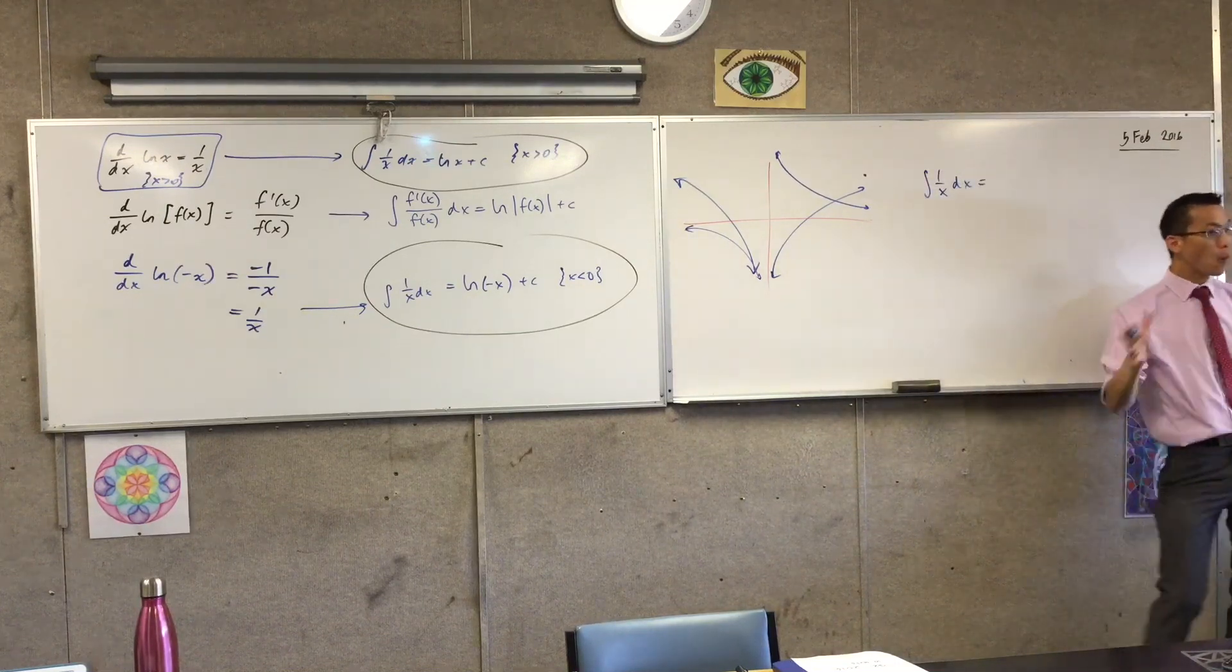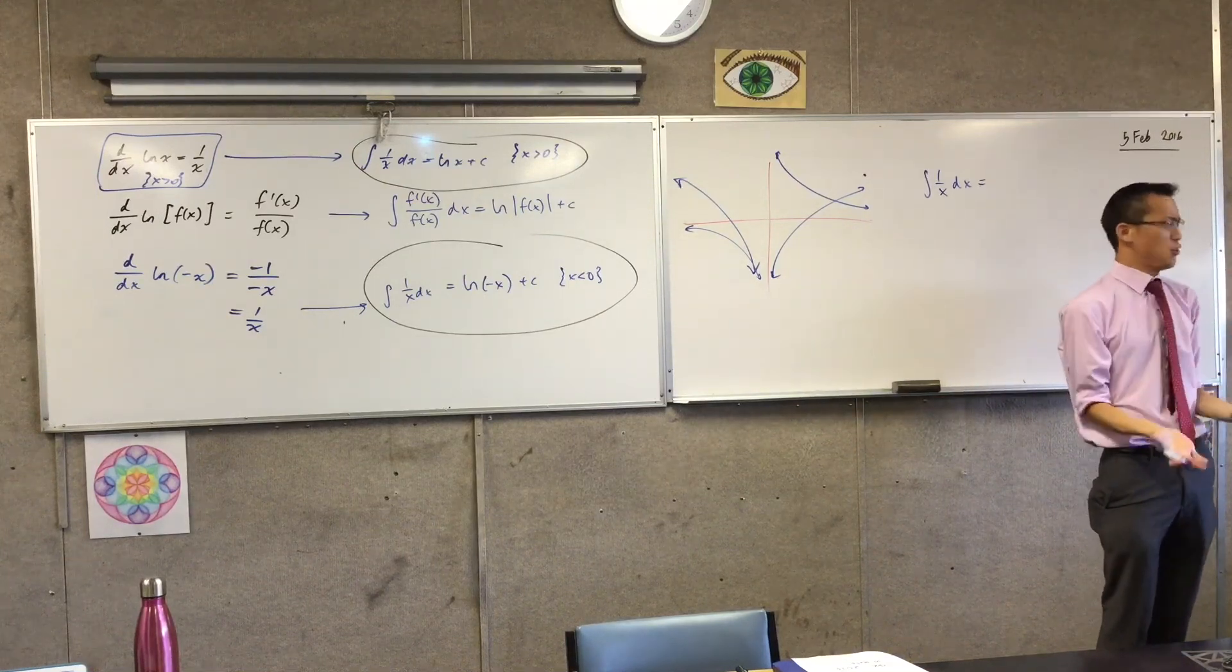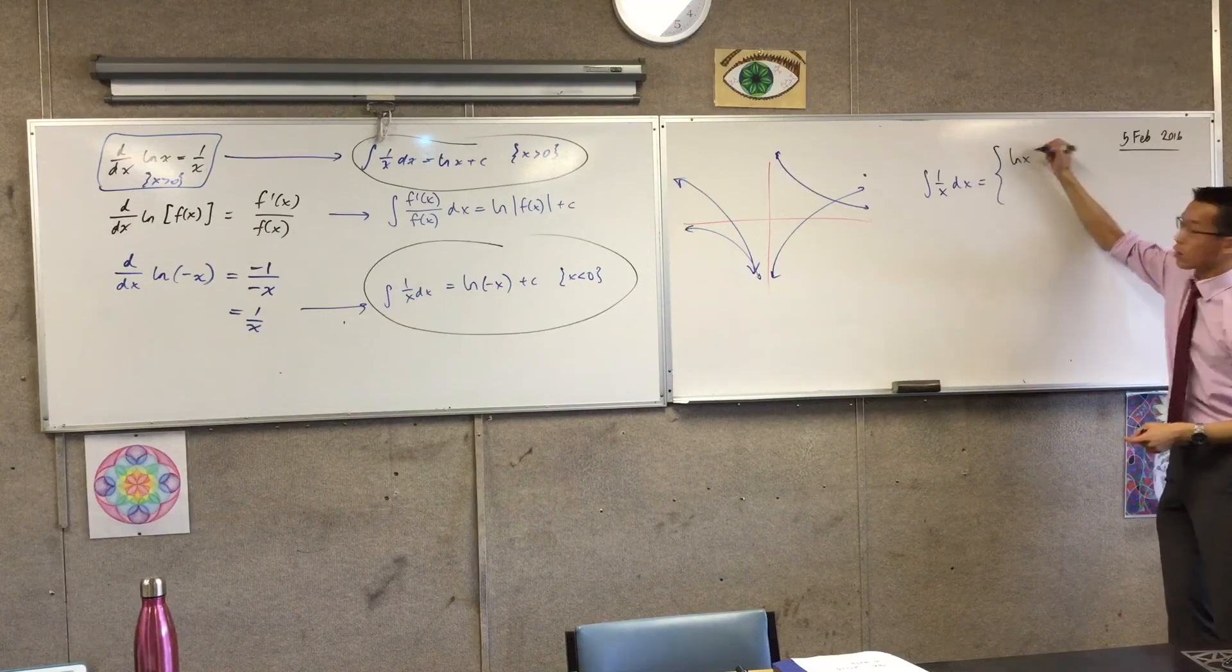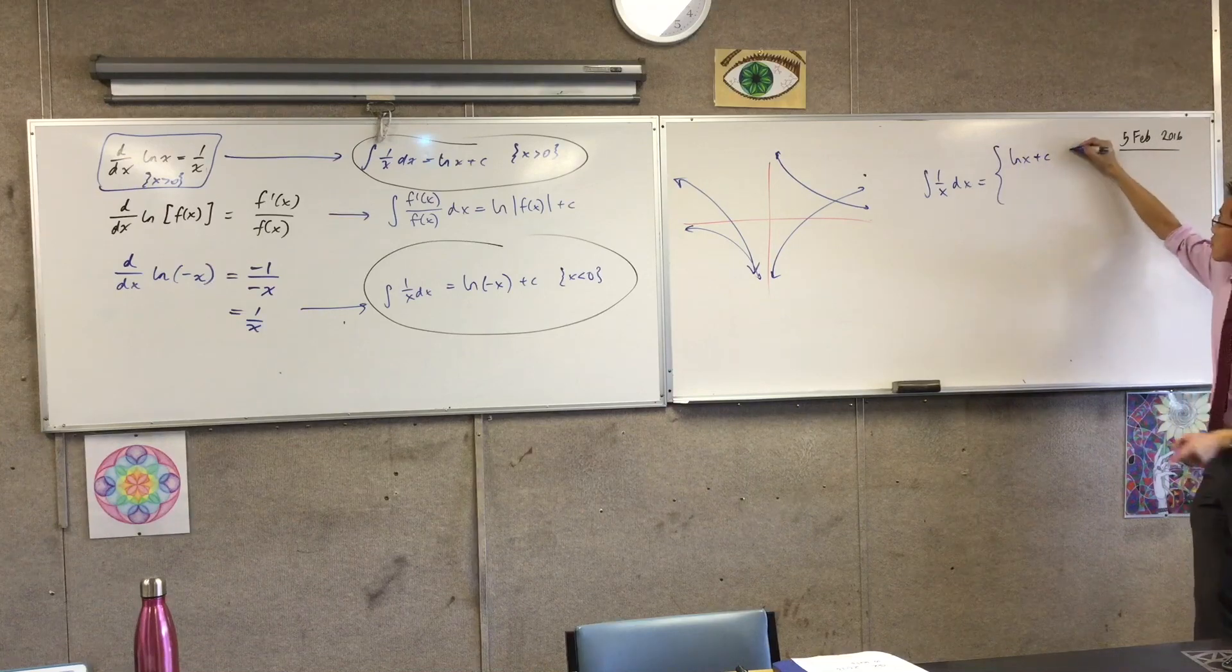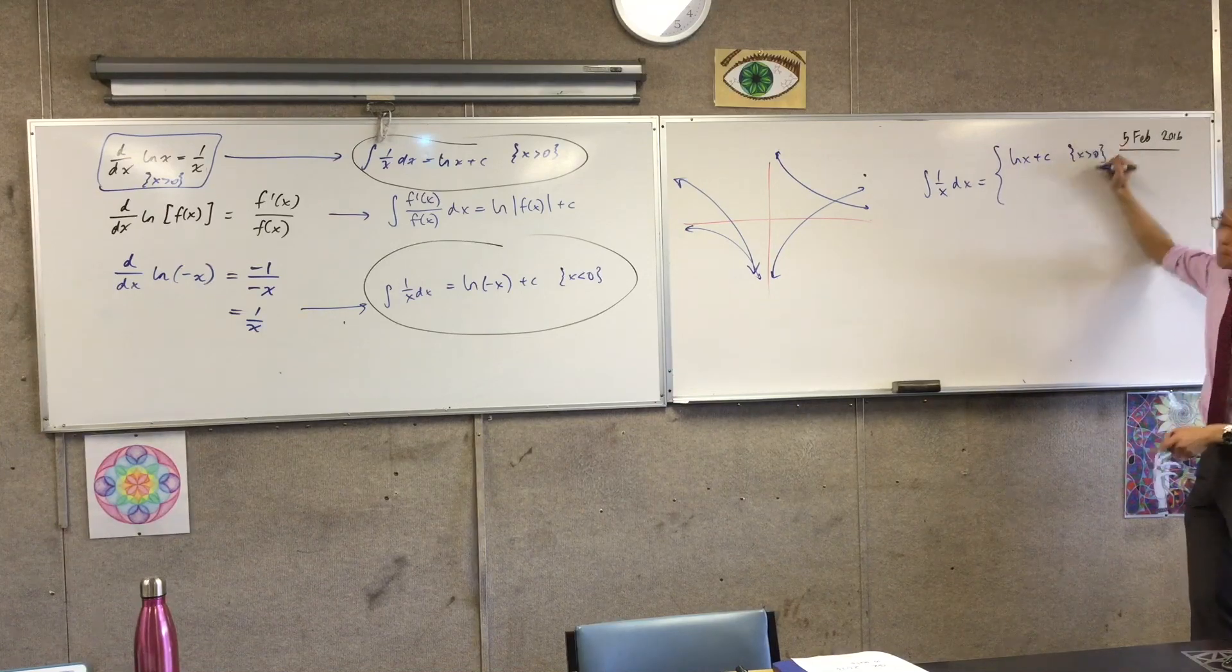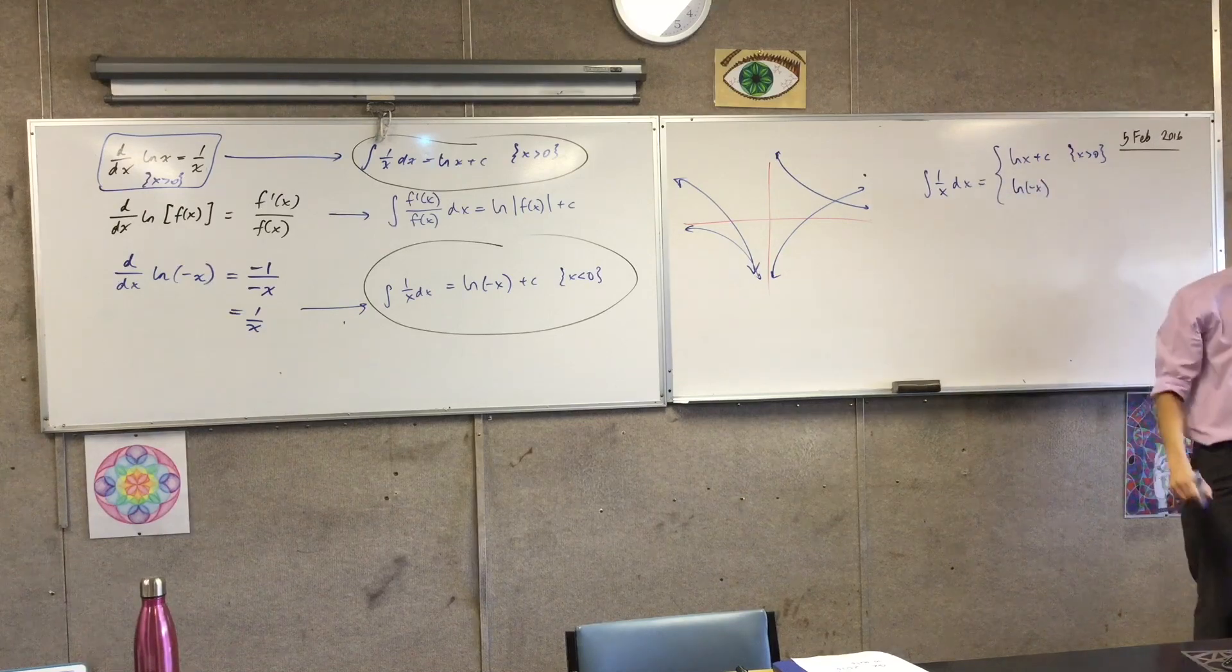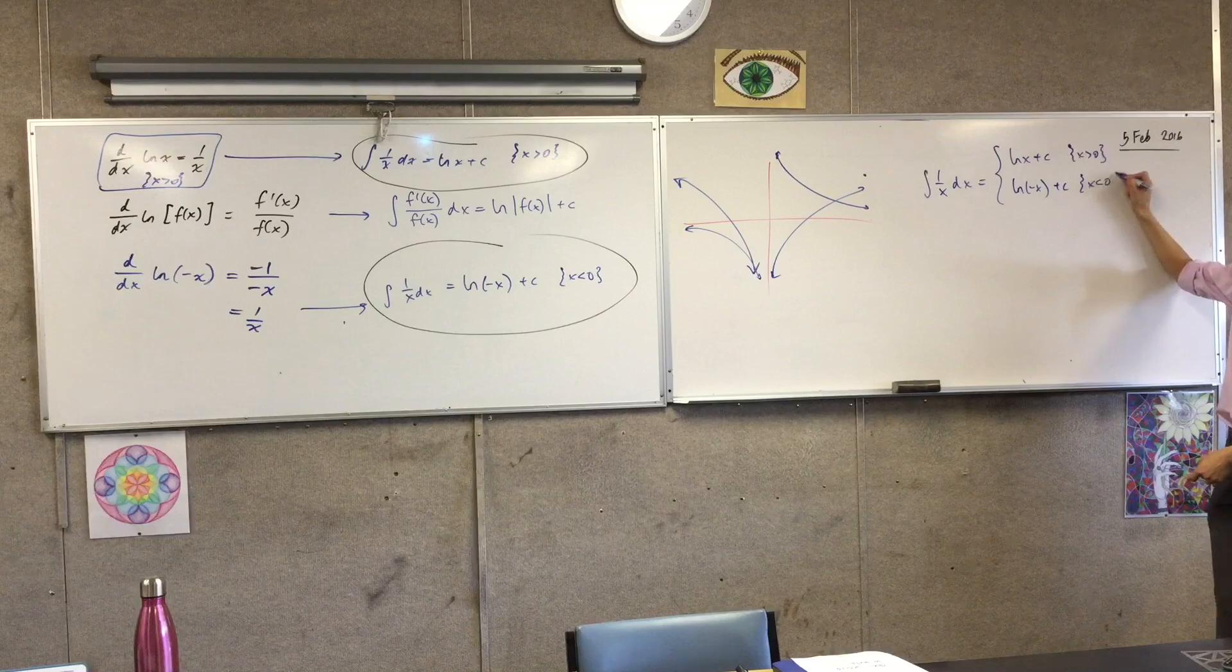But depending on where you are, if you're negative or if you're positive, you get two different answers. You get sometimes log of x plus a constant. Where do you get that again? When x is positive. But if you're somewhere else, if you are to the left of the y-axis, you'll get this guy.